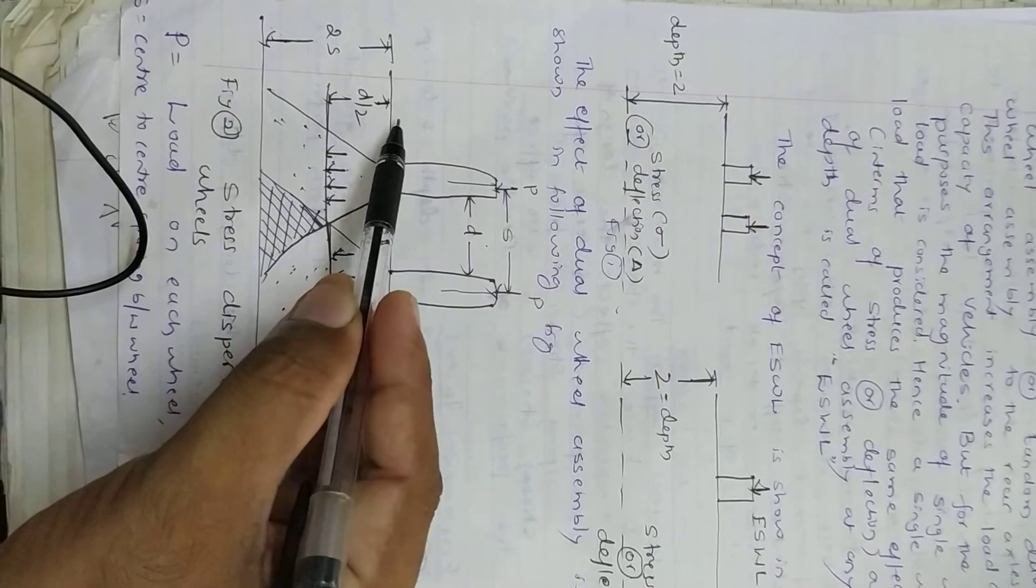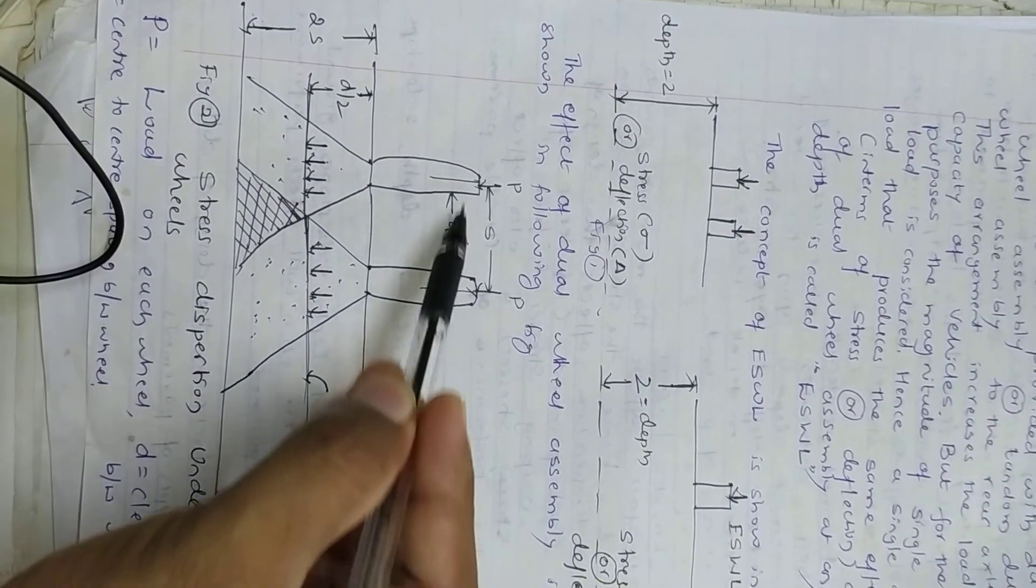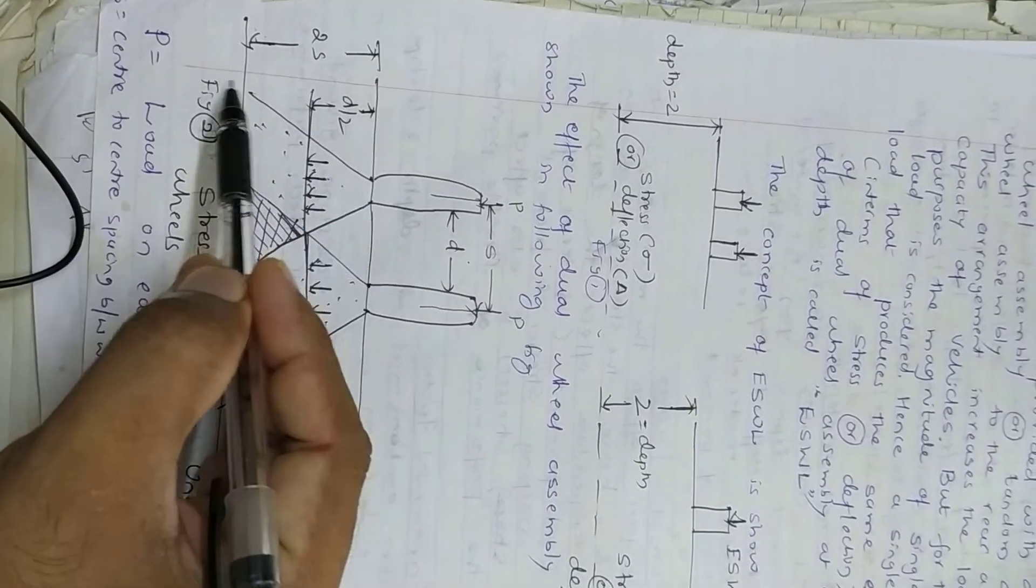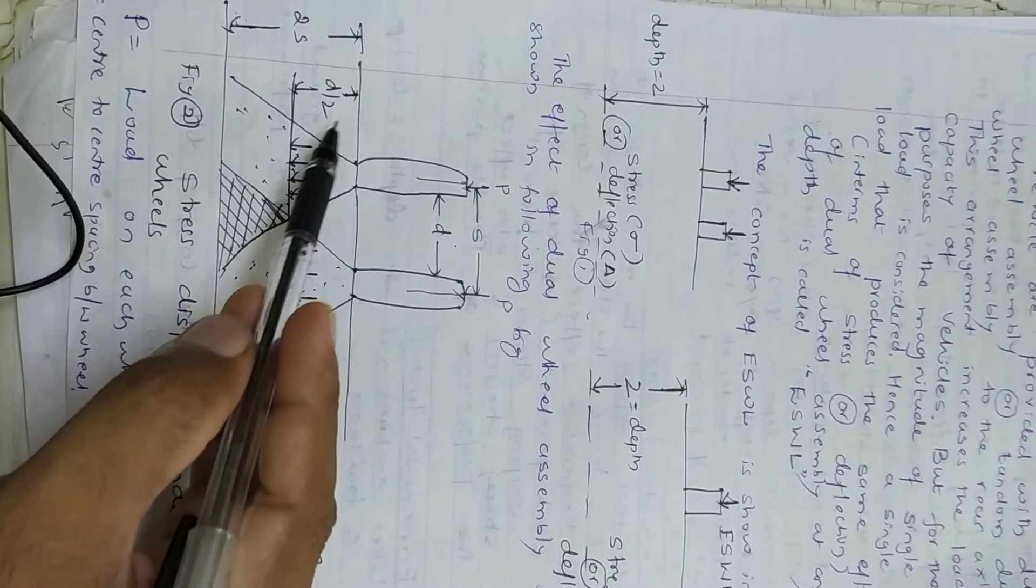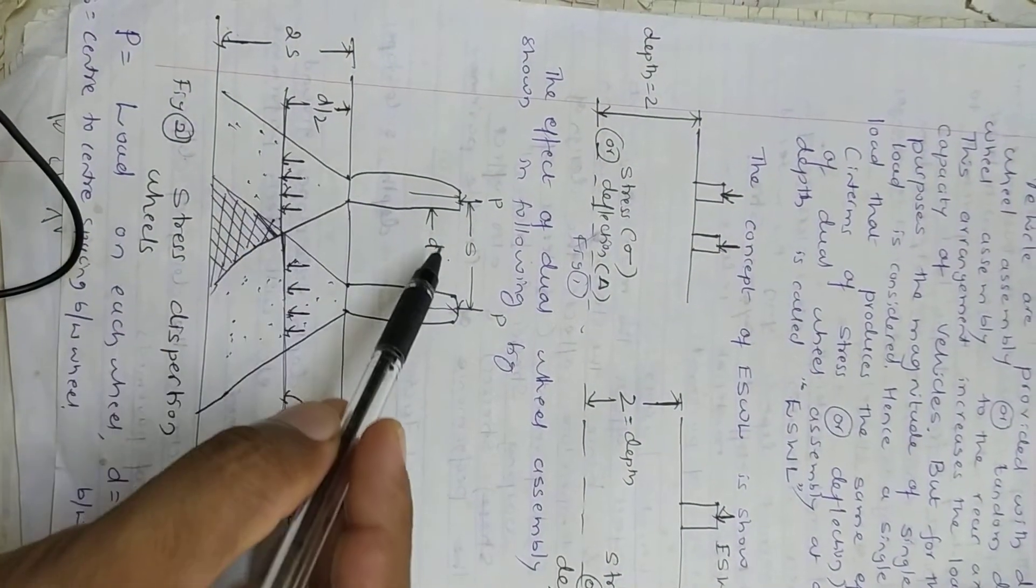Here, the depth becomes 2s - twice the wheel width becomes the depth of stress distribution. And here, the approximate point of overlap is at d/2, where d is the clear distance between two wheels. This shows the stress distribution under dual wheels.